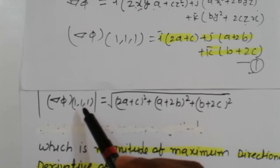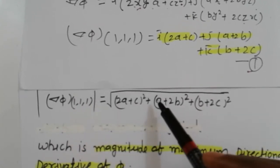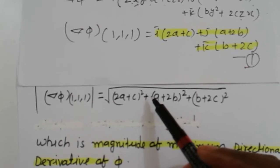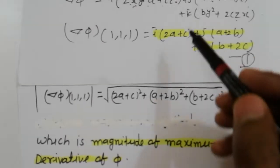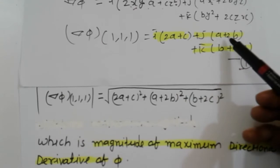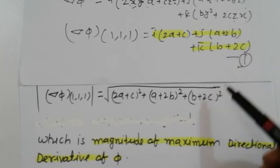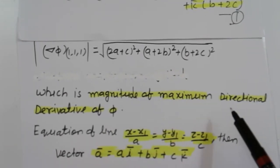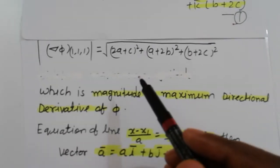Magnitude of nabla phi at point (1,1,1) is sum of square of coefficients of i, j, k. So here (2a + c) all square plus (a + 2b) all square plus (b + 2c) all square, which is the magnitude of maximum directional derivative of phi.